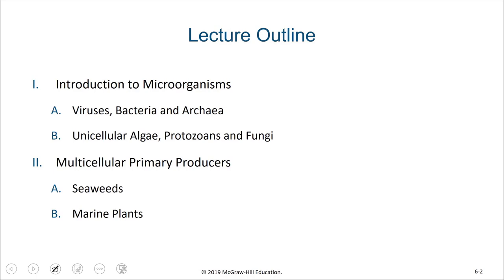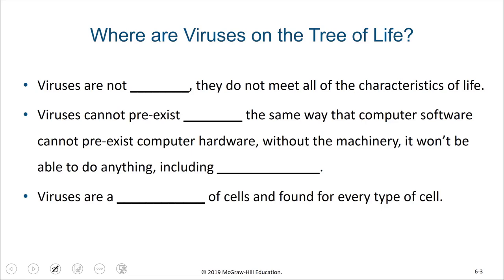When we had looked at the tree of life previously, you may have wondered where viruses were. Well, it turns out that viruses are not on the tree of life, because viruses are not alive. They do not meet all of the characteristics of life, and viruses could not pre-exist life — the same way that computer software could not pre-exist computer hardware. Without the machinery, it wouldn't be able to do anything, including propagate.